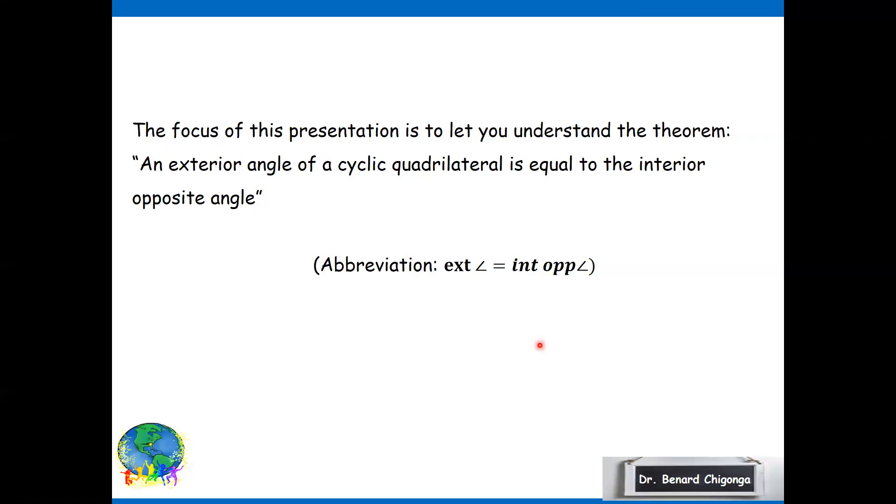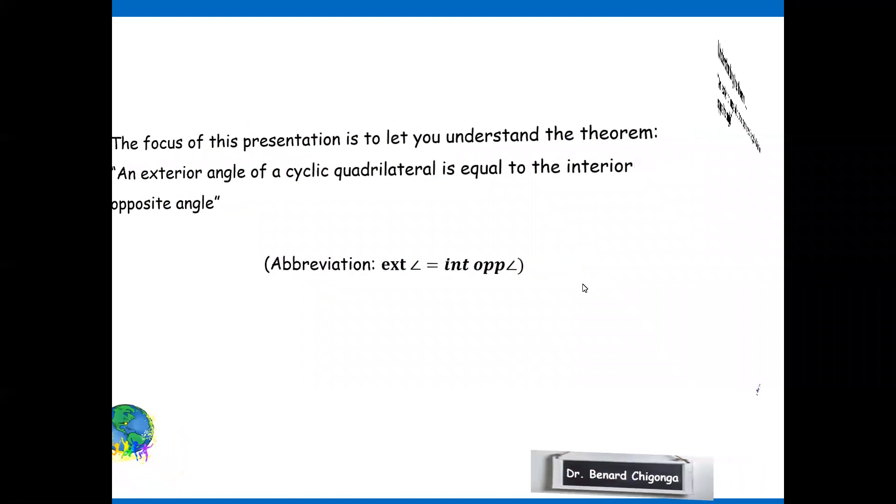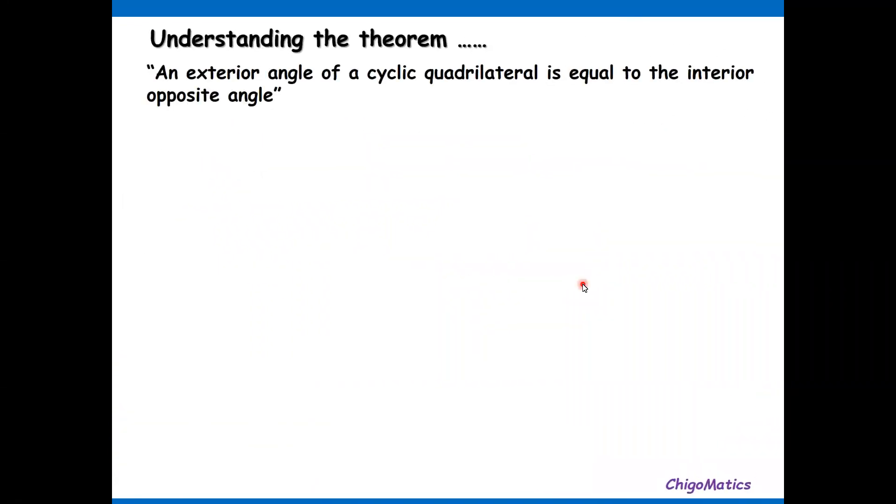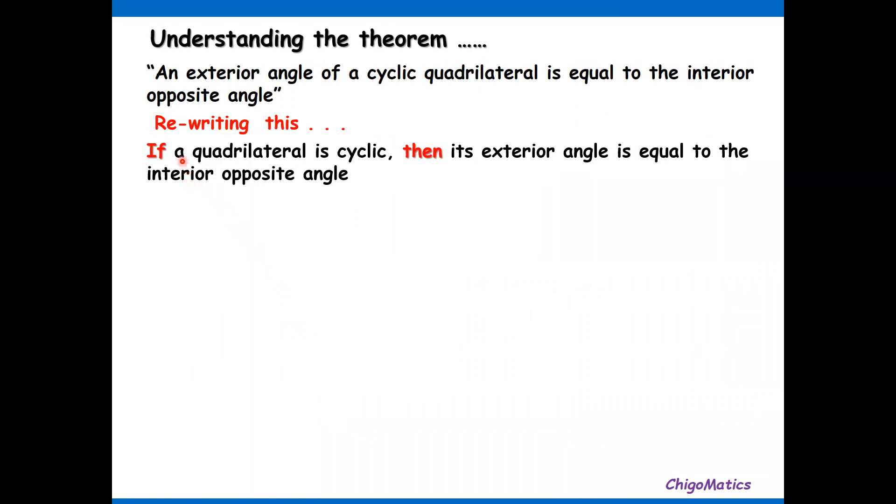The focus of this presentation is to let you understand the theorem: the exterior angle of a cyclic quadrilateral is equal to the interior opposite angle. Understanding the theorem, we write it in the form if-then so that you can identify the hypothesis and the conclusion. If a quadrilateral is cyclic, then its exterior angle is equal to the interior opposite angle.